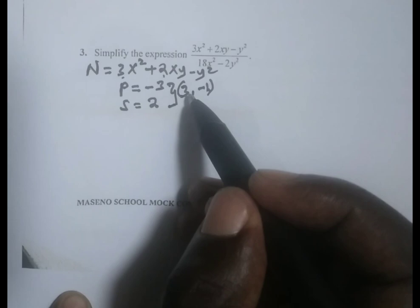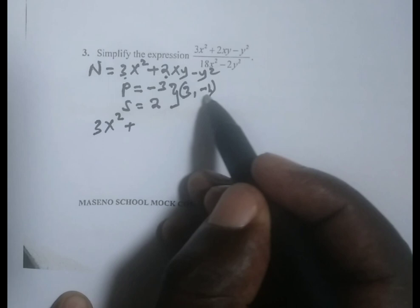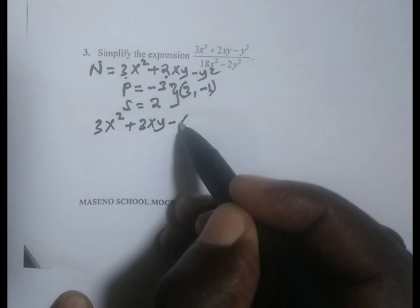Having gotten the two factors, we rewrite the expression as follows. We replace the linear term with the numbers: 3xy minus xy, because this is minus 1 minus y squared.